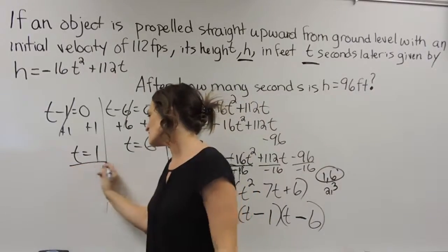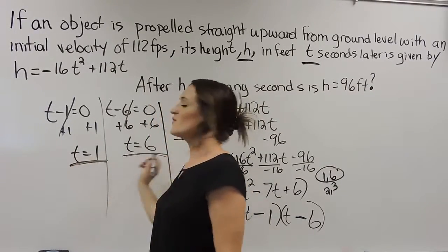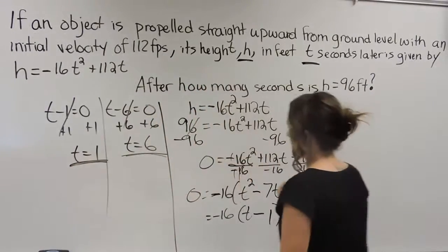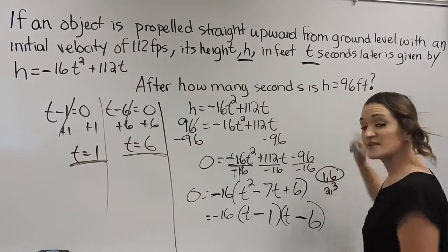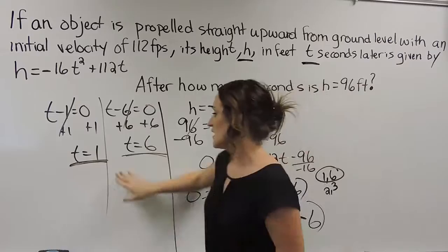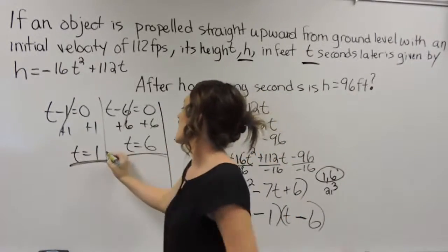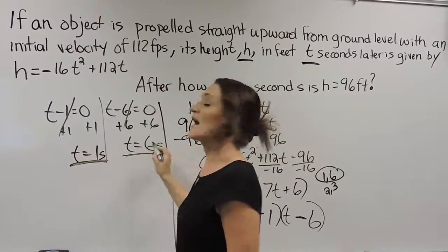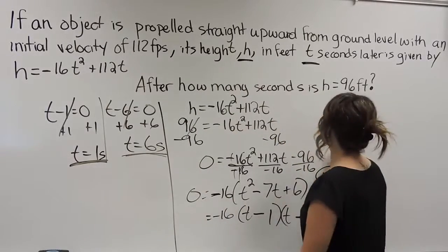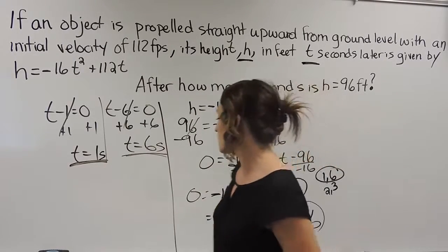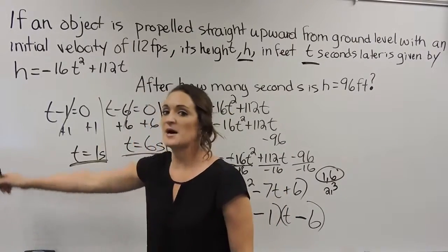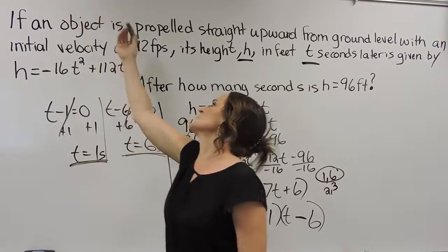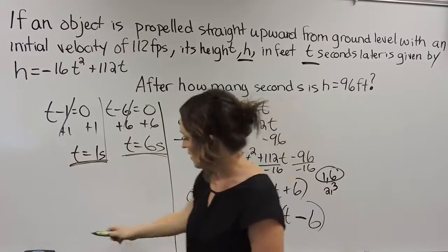Now what this tells us right here, remember that we were solving for time and it says how many seconds did it take for it to reach 96 feet? So this tells us that after one second and after six seconds is when this was 96 feet high. So think about it, if you're going to project something from the ground, it's going to come up and eventually it's going to have to come back down.